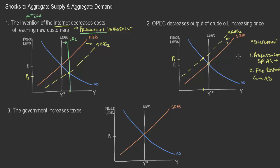If the Fed were to stimulate, that would shift aggregate demand to the right — I'll mark that in green as AD 2, crossing at a new point. We would see a return to our natural level of output, returning to the normal growth of the economy. However, we would actually see an extra increase in price levels as a result of that response — I'll mark that as P3.